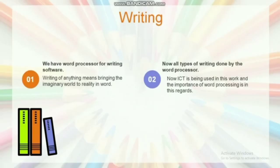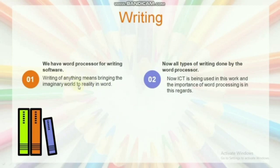What is writing? Writing is a medium of expression. We have to write for different needs. It might be a piece of literature like a poem, short story, novel, diary, etc. We have word processor for writing software. Writing of anything means bringing the imaginary world to reality. All types of writing are done by the word processor.